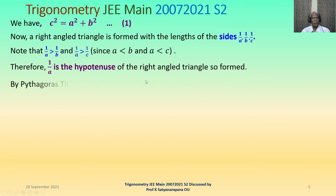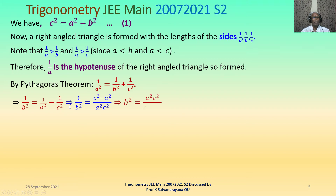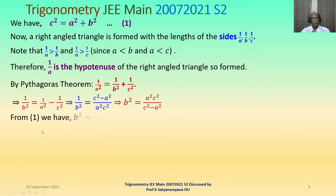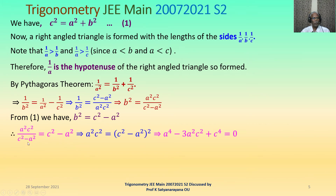By the Pythagorean theorem: (1/a)² = (1/b)² + (1/c)². From this, 1/b² = 1/a² − 1/c². Taking the LCM: 1/b² = (c² − a²) / (a²c²). Inverting gives b² = a²c² / (c² − a²). From equation 1 we also get b² = c² − a². Equating these: a²c² / (c² − a²) = c² − a², and cross-multiplying gives a²c² = (c² − a²)².